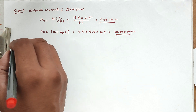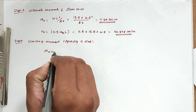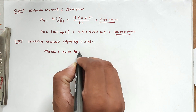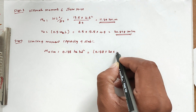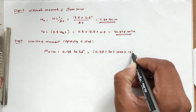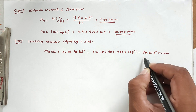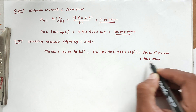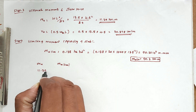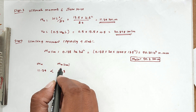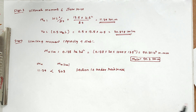Step 4: Check limiting moment capacity of slab. Mu,lim = 0.138 × fck × b × d² = 0.138 × 20 × 1000 × 135² = 50.3 × 10⁶ N·mm = 50.3 kN·m. Since Mu,lim (50.3 kN·m) > Mu (11.39 kN·m), the section is under-reinforced.